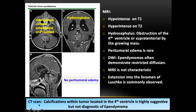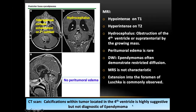On CT, while MRI is the standard, CT is often the first investigation done. An important point: if calcification is present within a tumor located in the fourth ventricle, it is highly suggestive of ependymoma — not diagnostic, but strongly suggestive.